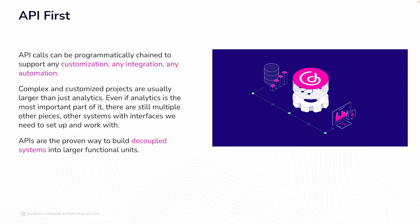API calls can be programmatically chained to support any customization, any integration, and any automation. The API calls are essentially like building blocks of these processes — they can be used, reused, and reordered in different ways for everything from small projects to large, more complex ones, making the complex much more simple. Complex and customized projects are usually larger than just the analytics. Even if analytics is the most important part, there are still multiple other pieces and systems with interfaces we need to set up and work with. APIs are the proven way to build decoupled systems into larger functional units.